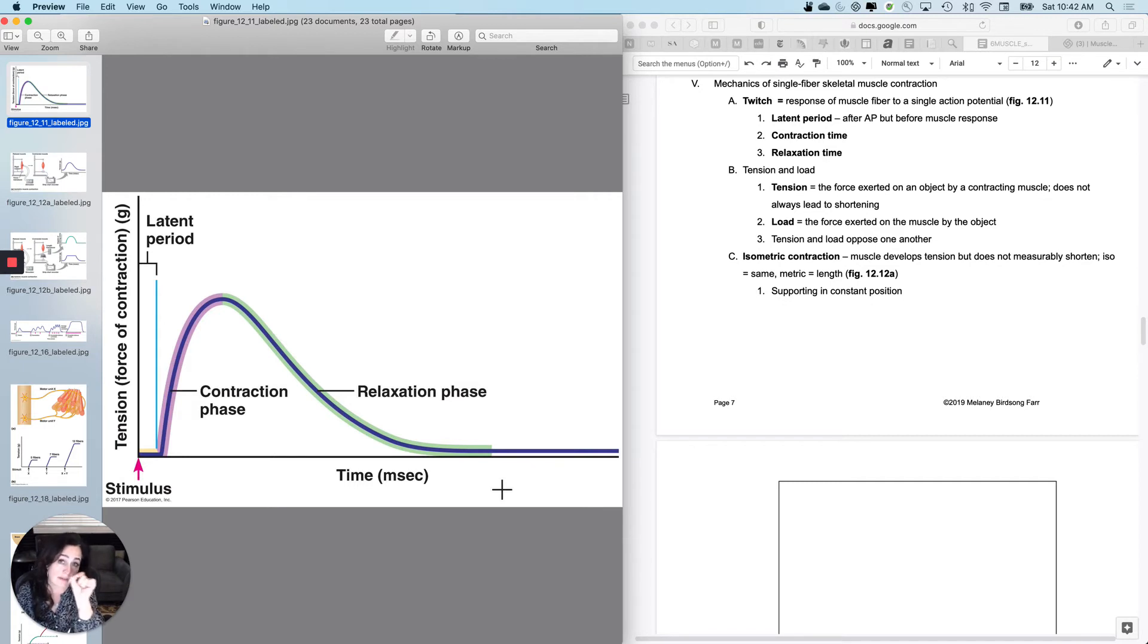without actually overcoming what we call the load. The load is the force that is exerted on the muscle by the object. And if I put more load, then I'm going to have to generate more tension to overcome the load. So tension and load oppose one another. And the muscle generates tension, then it has to try to move the load.